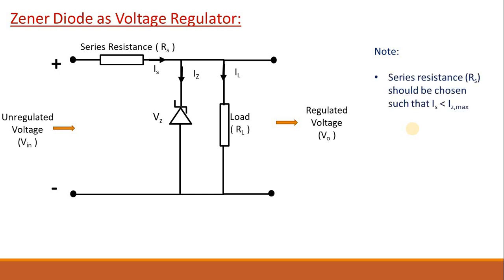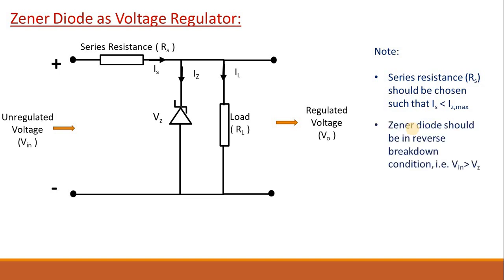RS should be chosen such that the current through this series resistance must be less than the maximum Zener diode allowed current. Suppose there is no load — current through the load will be zero, so all of IS will pass through the Zener, and we know after a certain limit the Zener will burn out. There is a maximum current limit for a Zener, so RS is also a safe resistance. The unregulated voltage must always be greater than the Zener breakdown voltage; otherwise the Zener will not break and will act as an open circuit.